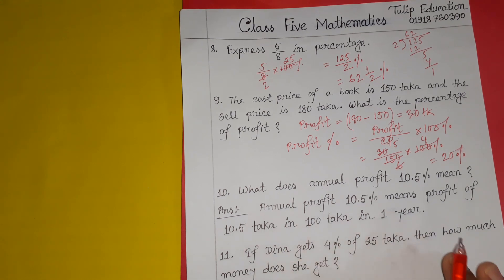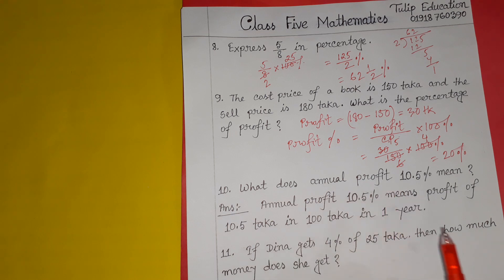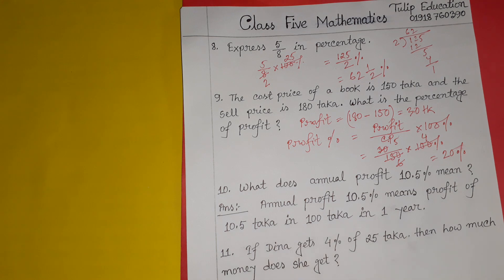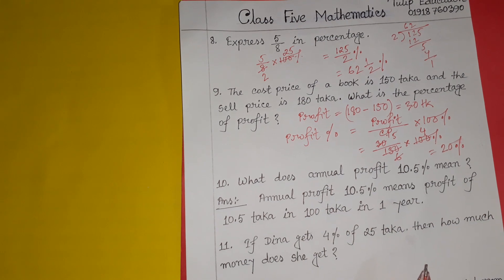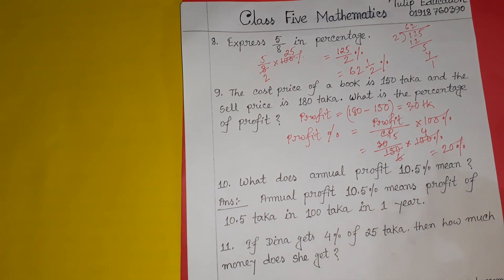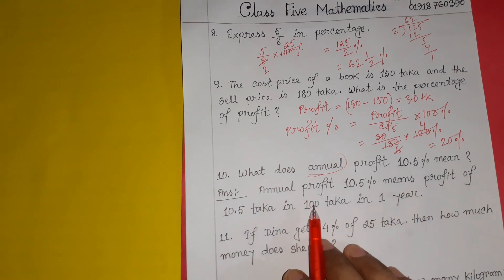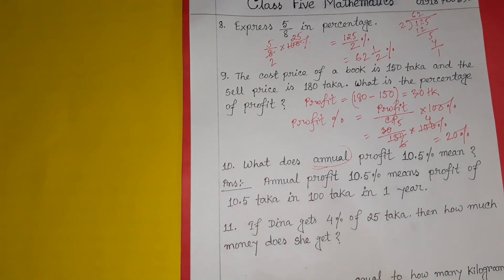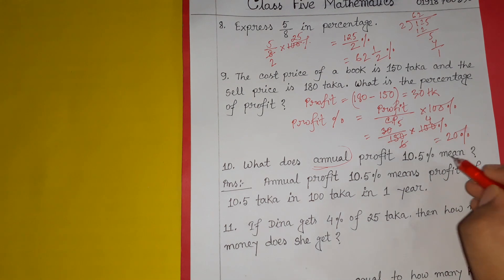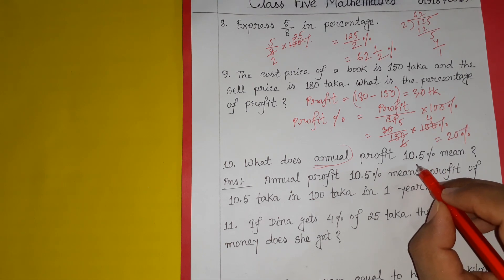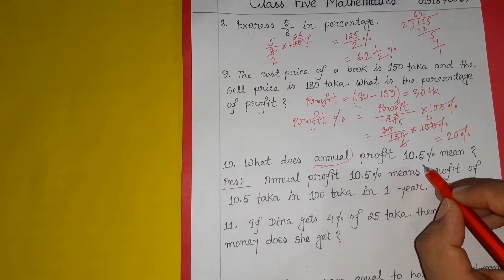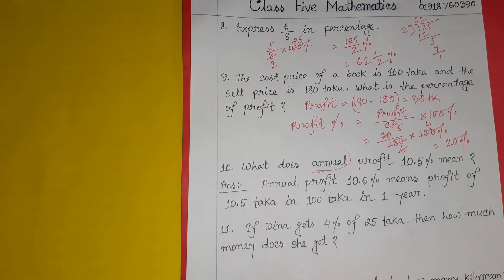Question number 10: what does 10.5% annual profit mean in business calculation? If you take a loan from a bank of, say, 1000, and the bank charges 10.5% annual profit, this means you earn or pay 10.5% per year on that amount.